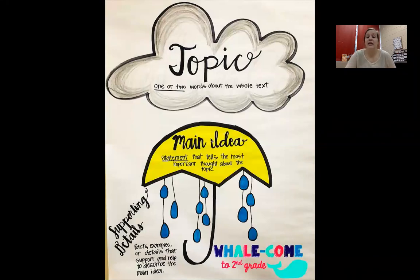Then you look at the umbrella, which is the main idea, and it is the statement that tells the most important thought about the topic. So you have your topic, what the whole text is about. Then you have your main idea, which is going to be one, maybe two sentences, telling me the most important part about the topic.